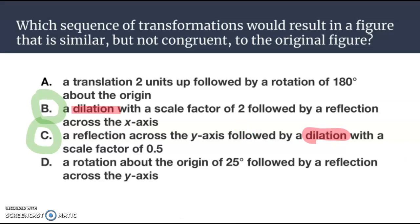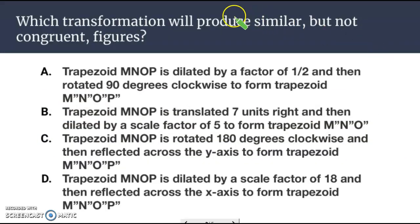Look at another example here. Which transformation will produce similar but not congruent figures? Turns out three of these end up being the right. And again, we are looking for the dilation. Just look for the word dilated. MNOP dilated by a factor of 1.5 and then rotated 90 degrees to form the new figure. Trapezoid MNOP is translated 7 units to the right and then dilated by a scale factor of 5 to form trapezoid M'N'O'P'. Forgot the P there. Double prime.